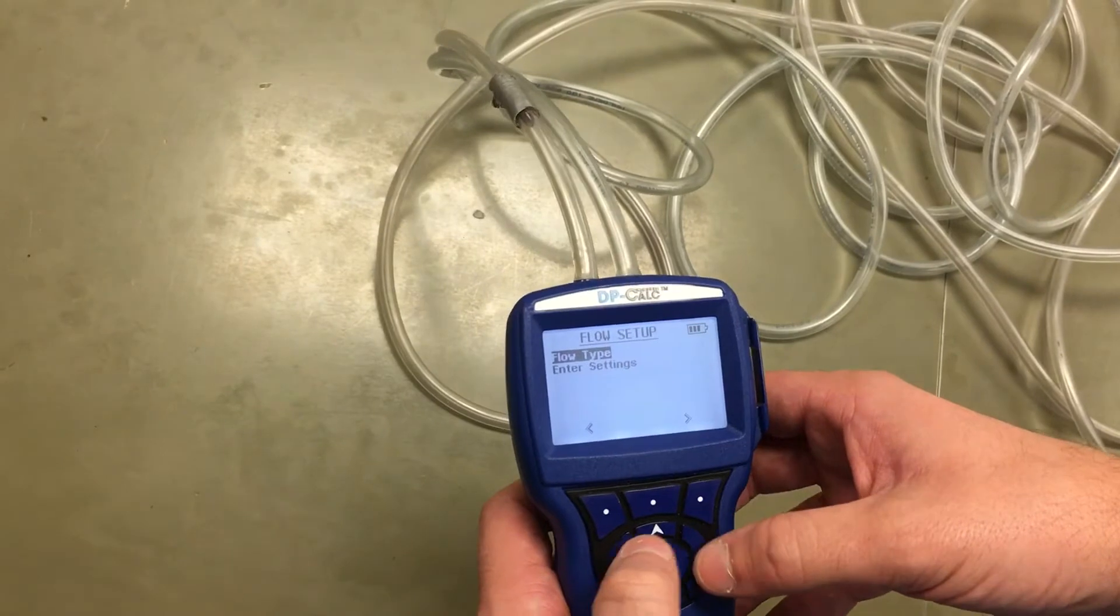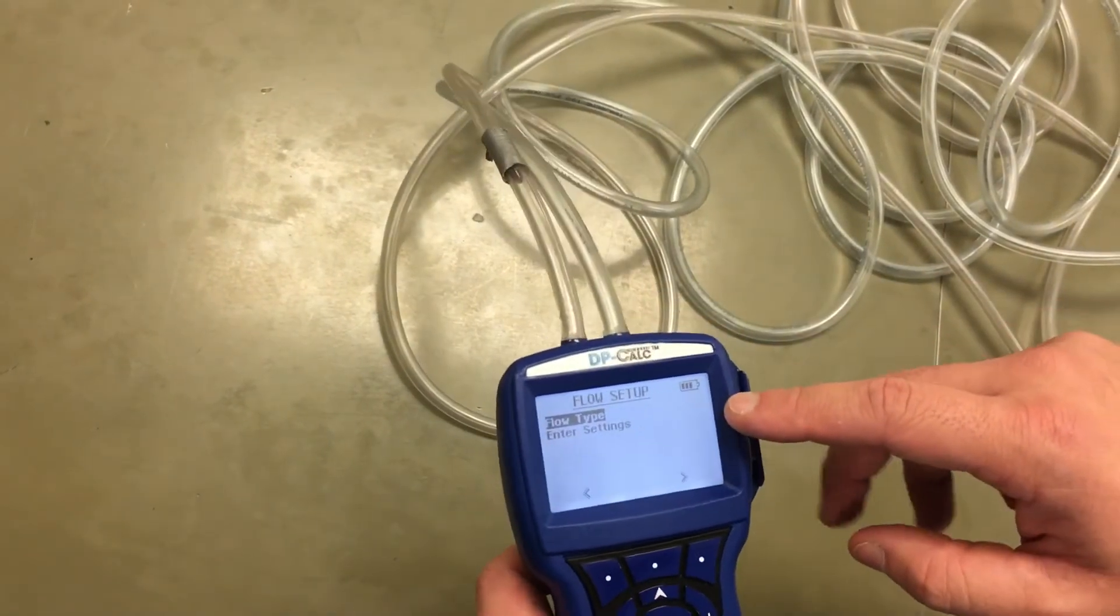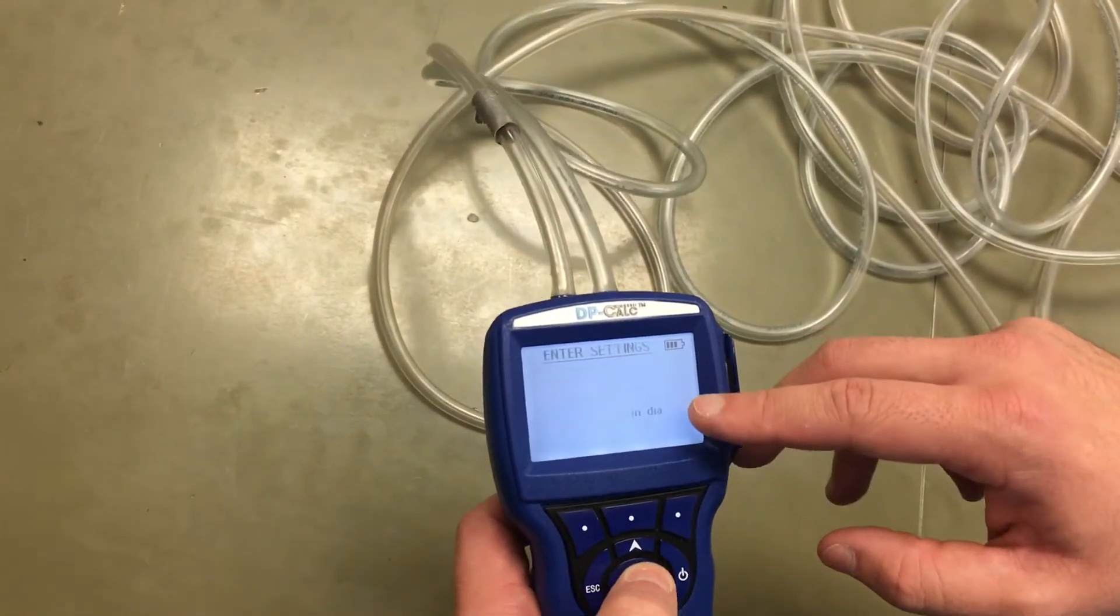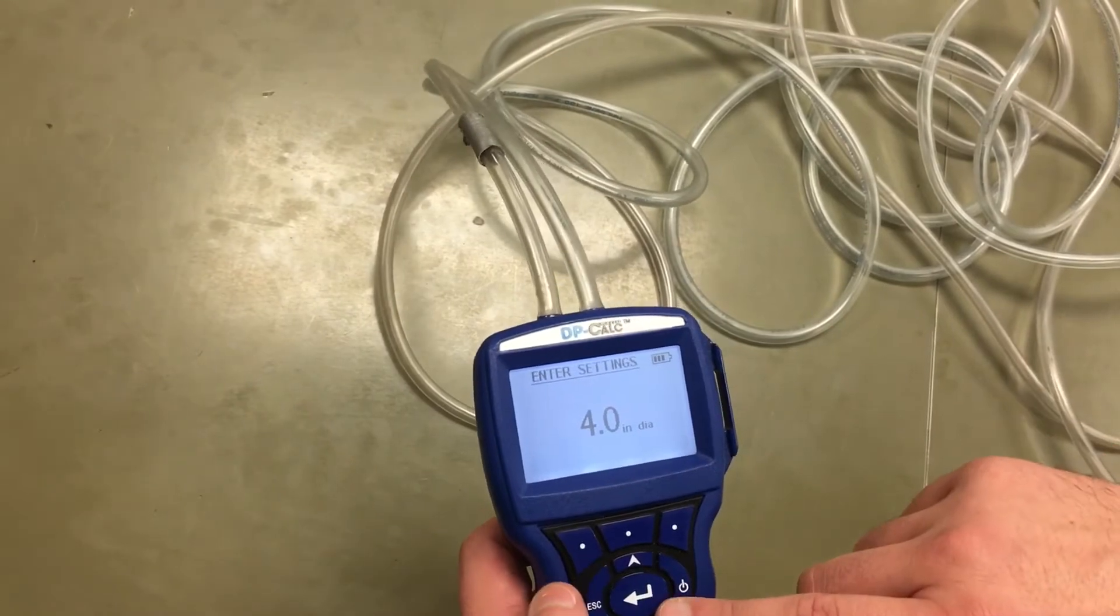We'll get the flow set up. Set it to a round duct, because we're going to be using a four-inch round duct with a four-inch diameter.